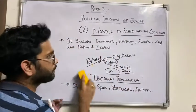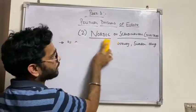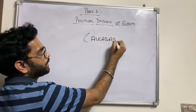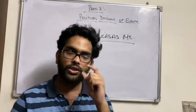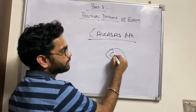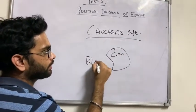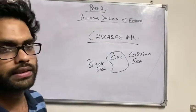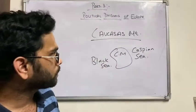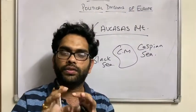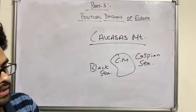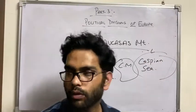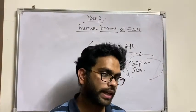In the last lecture we also discussed the Caucasus Mountain. One important thing you should know: if this is the Caucasus Mountain, then on the left side is the Black Sea, and on the right side is the Caspian Sea. This is a very important map. The Caucasus Mountain is a mountain range separating two seas — the Black Sea and the Caspian Sea. Also, the Caspian Sea is actually a lake because it is surrounded by land on all four sides.